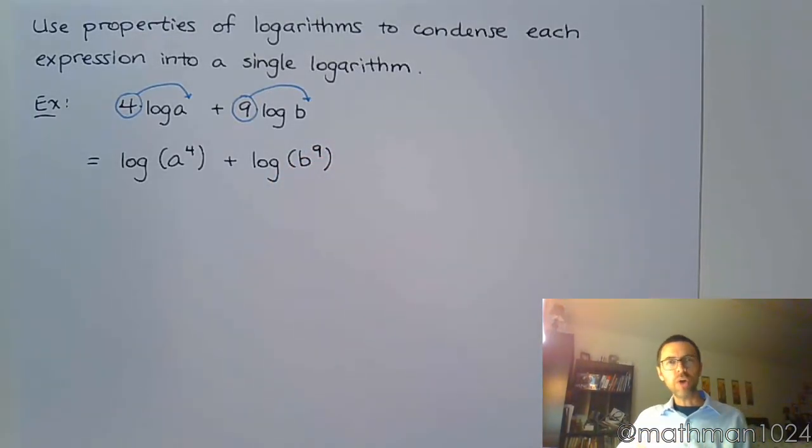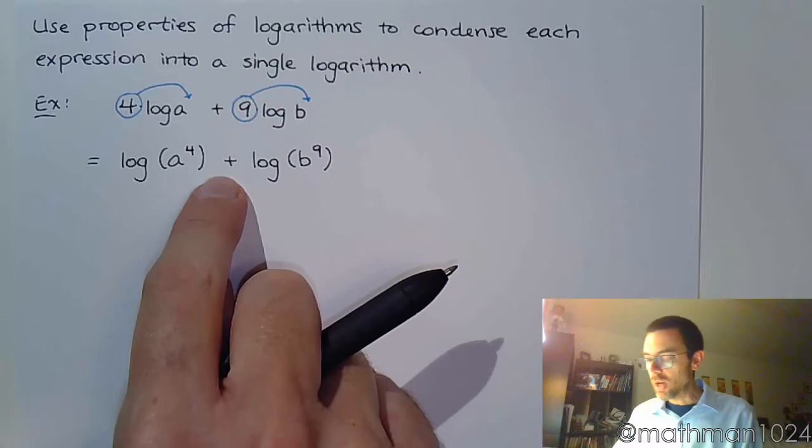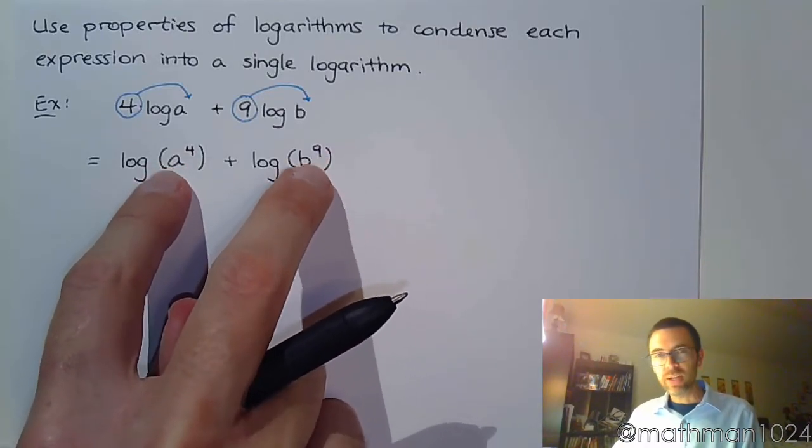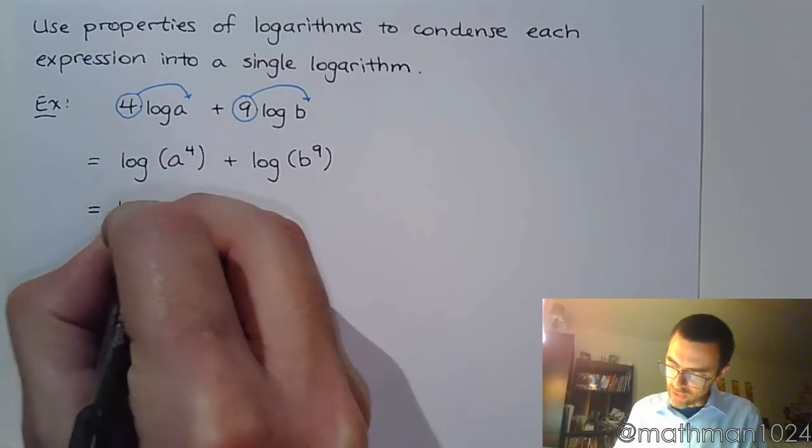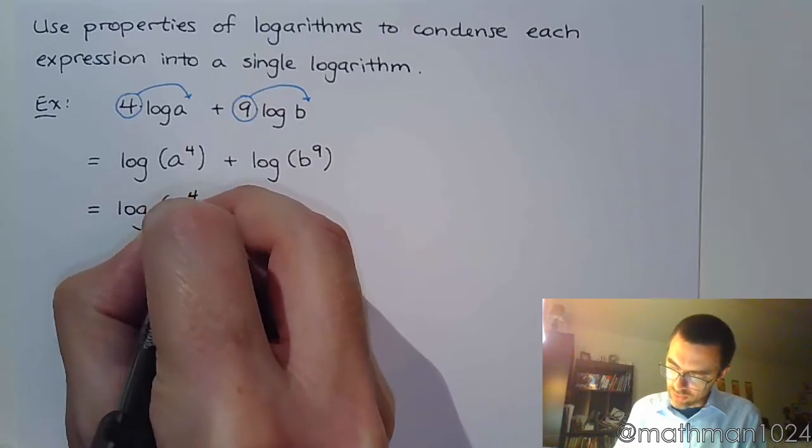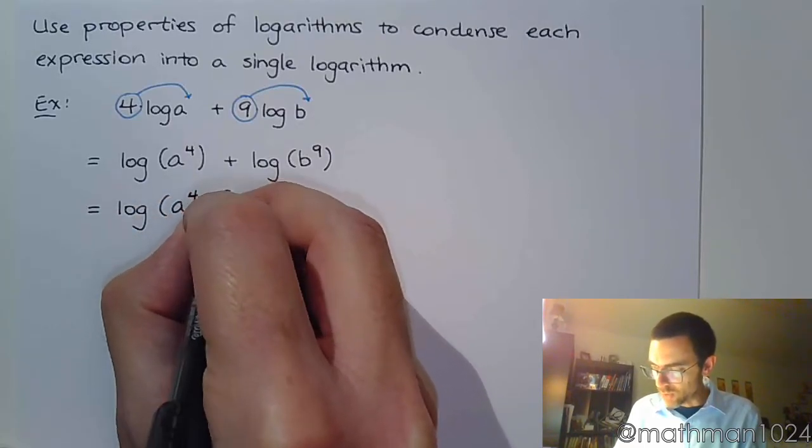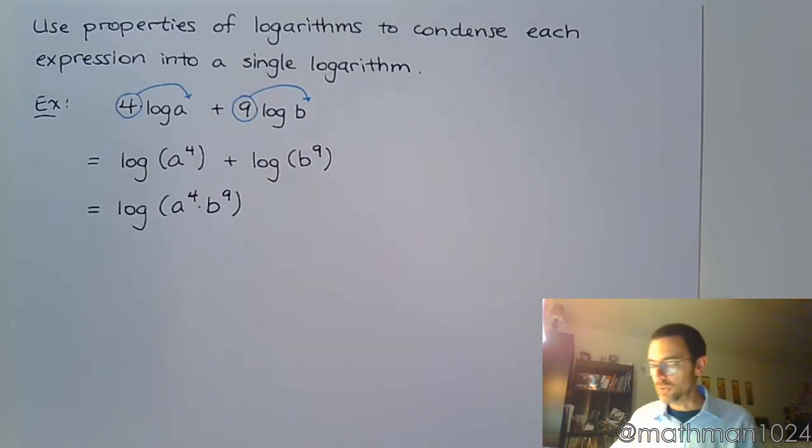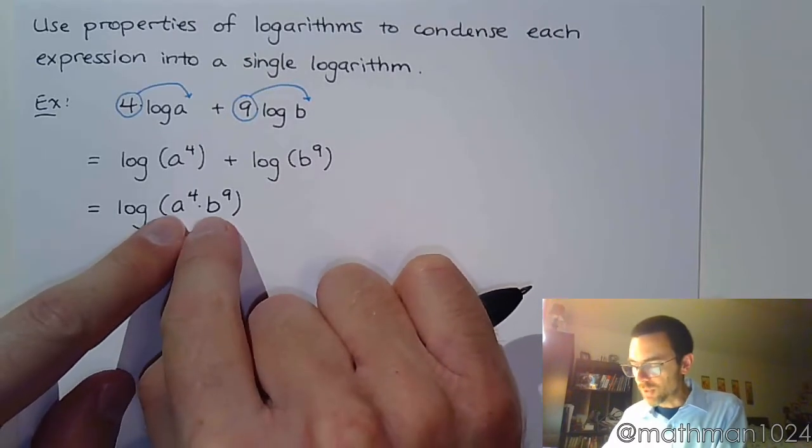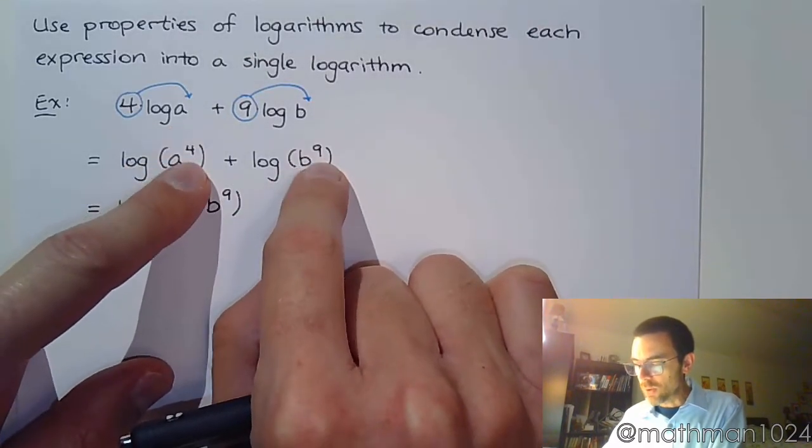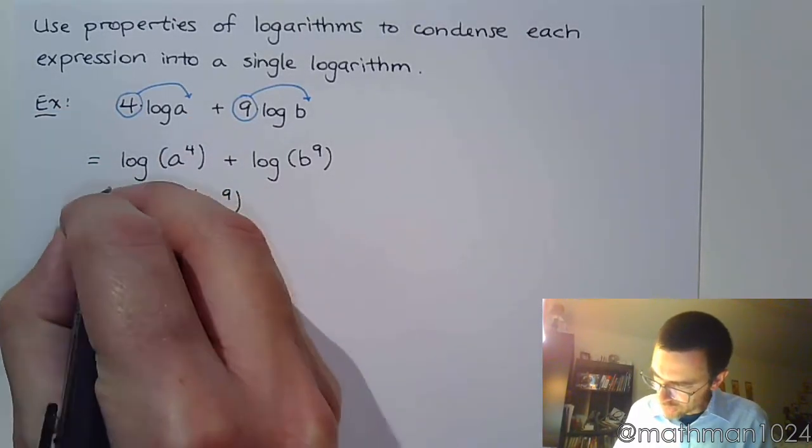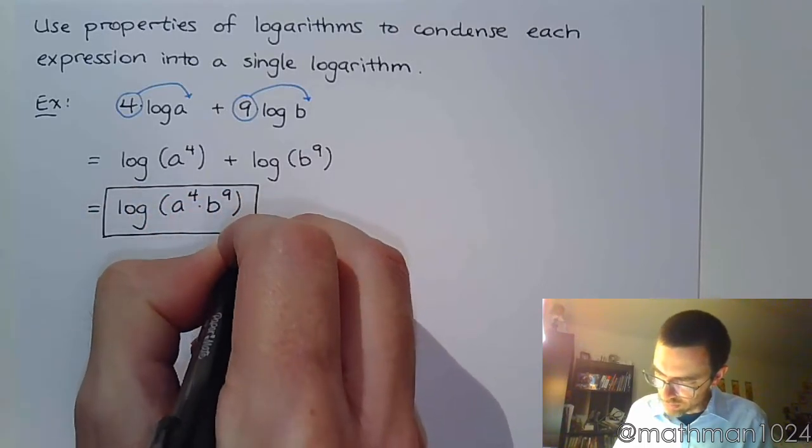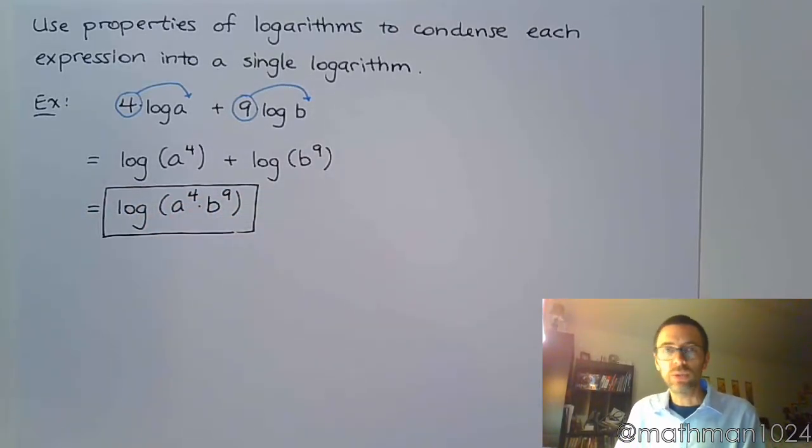So that's that third property of logarithms just going backwards. The first property of logarithms says that if there's a sum, we can do the product of what's inside the logarithms and create a single log that way. So we can put these guys back together and say a to the 4th times b to the 9th. So we have a product inside a single logarithm. You're not trying to solve anything, you're just trying to condense into a single logarithm.